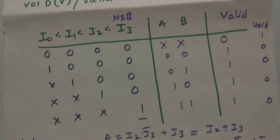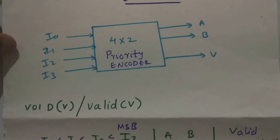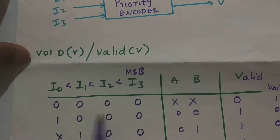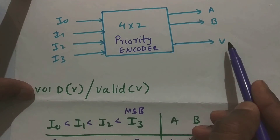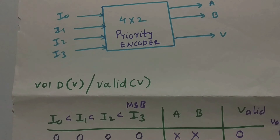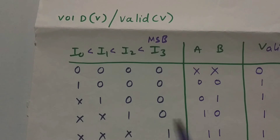So we have obtained the equations for A, B, and valid for the priority encoder. Whenever all inputs are zero, the output will be X X (undefined) and the valid bit will be 0 while the void bit will be 1. The major advantage of the priority encoder is handling cases where more than one input is active at the same time by assigning priority. If you have any doubts, comment below.